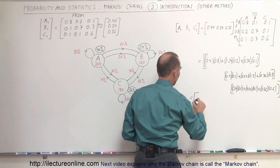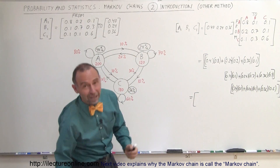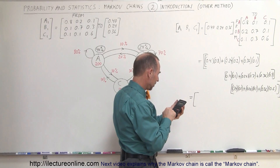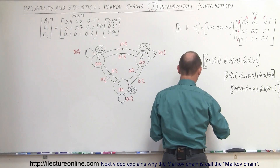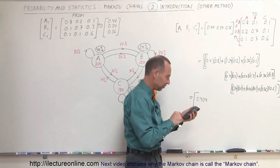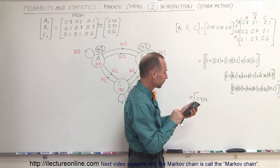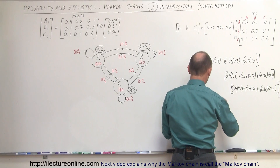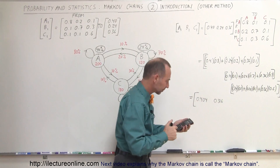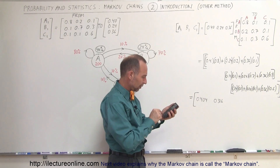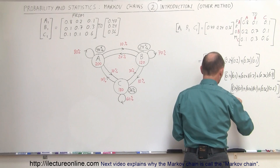Now we need a calculator. So: 0.4 × 0.8 plus 0.24 × 0.2 plus 0.36 × 0.1 equals 0.404. That's our first element. Second element: 0.4 × 0.1 plus 0.24 × 0.7 plus 0.36 × 0.3 equals 0.316. And the third element: 0.4 × 0.1 plus 0.24 × 0.1 plus 0.36 × 0.6 equals 0.280.